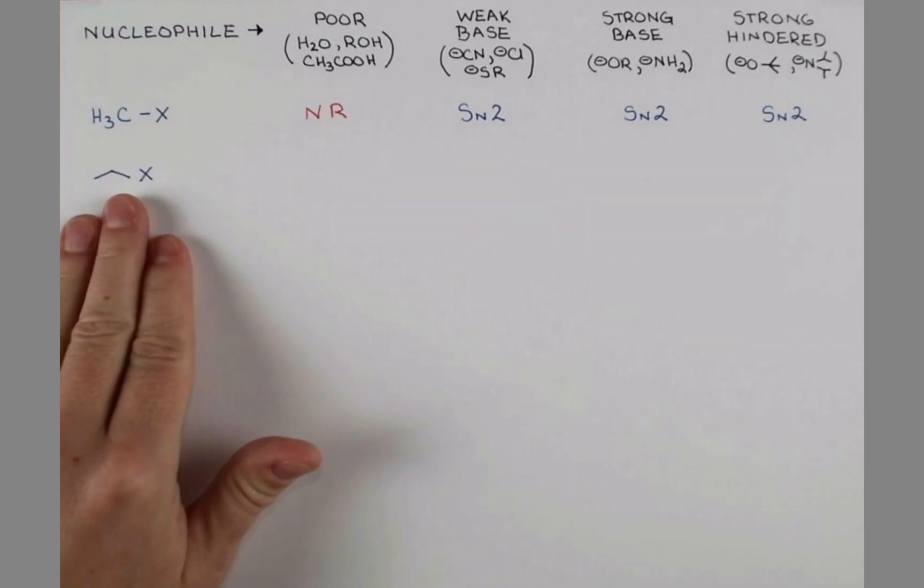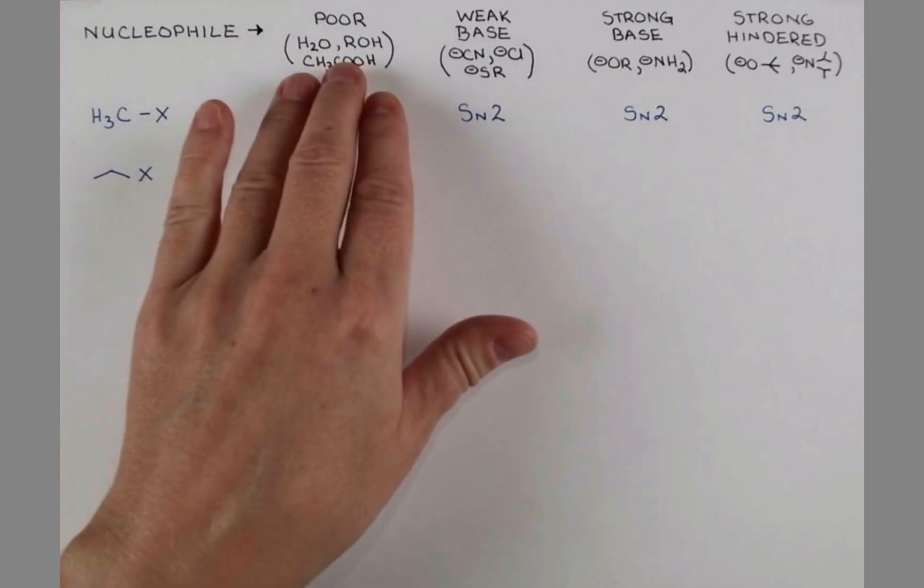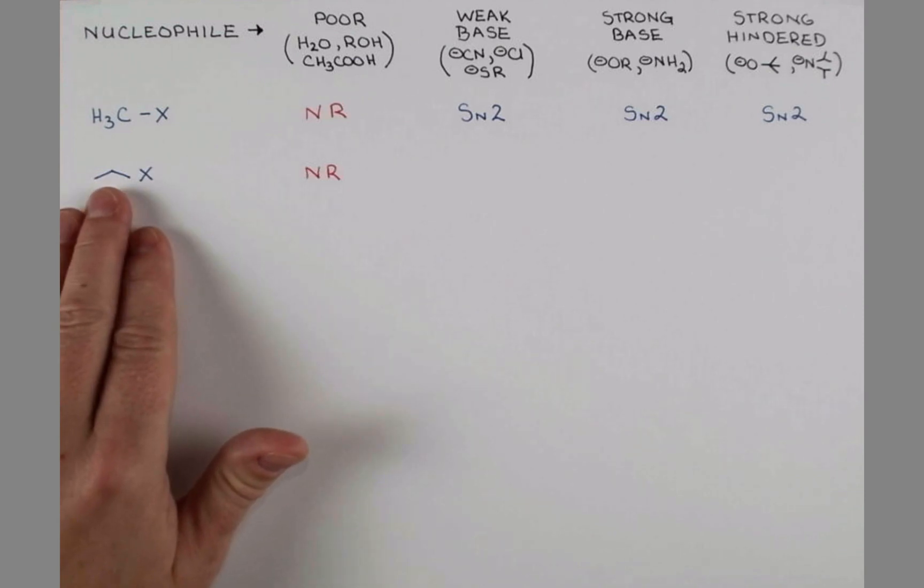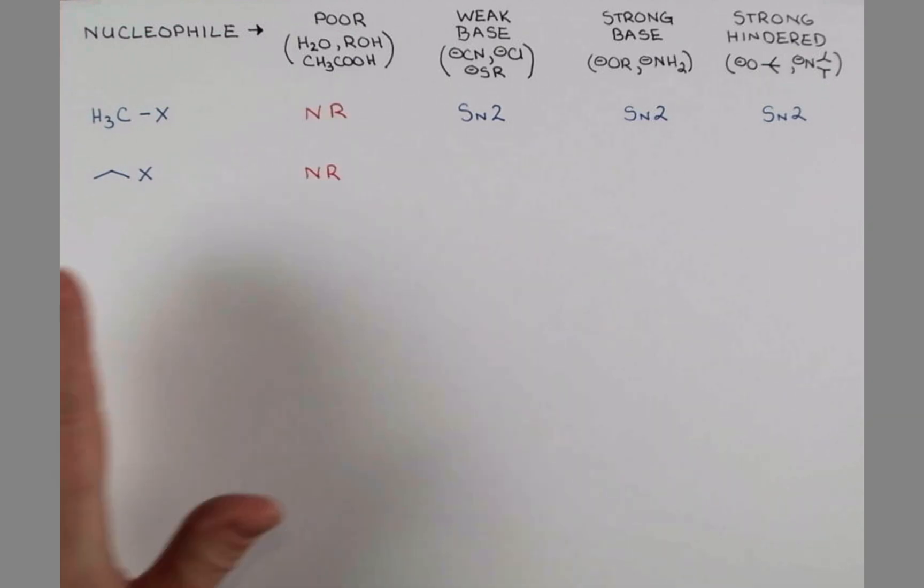Next, let's consider a primary substrate that is unhindered. Primary substrates don't tend to react very well with these poor nucleophiles either, so we'll predict no reaction for this first row again. Now, primary carbocations are not stable either, so with weak bases, we're going to get SN2 again.